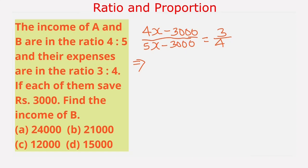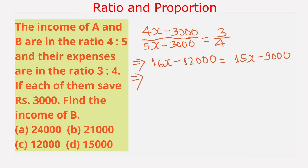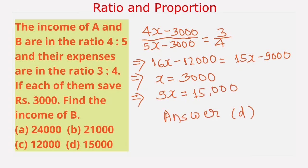By cross multiplication, we get: 4 times (4x − 3,000) = 3 times (5x − 3,000), giving 16x − 12,000 = 15x − 9,000. This gives x = 12,000 − 9,000... wait — 16x − 15x = x = 12,000 − 9,000 = 3,000. Wait, solving: 16x − 12,000 = 15x − 9,000, so x = 3,000. Income of B is 5x = 15,000. From the given options, our answer is option D, 15,000.